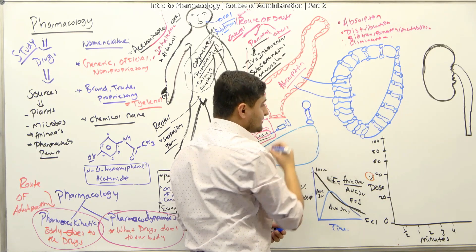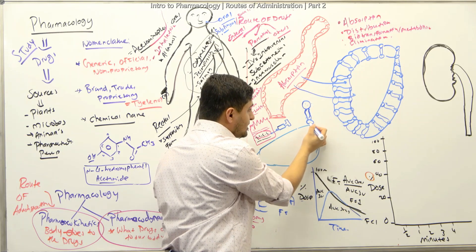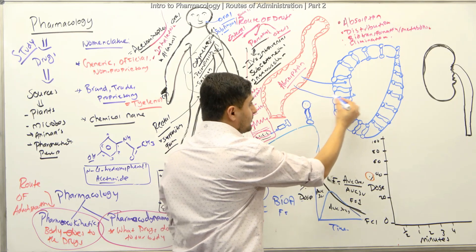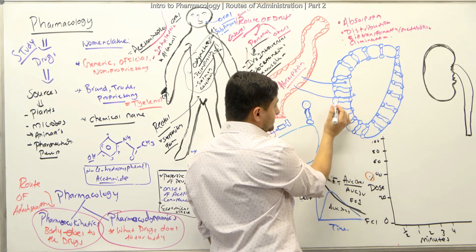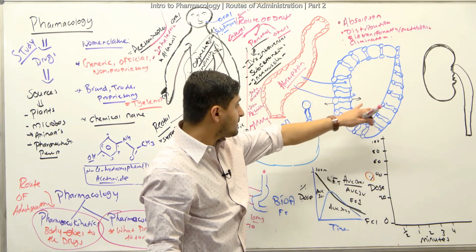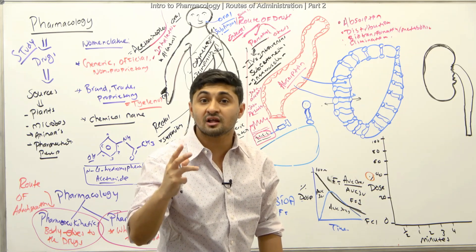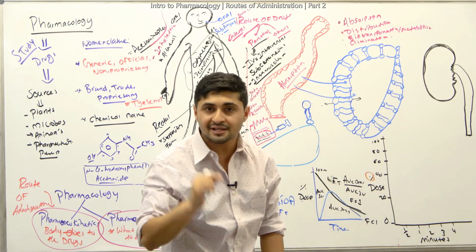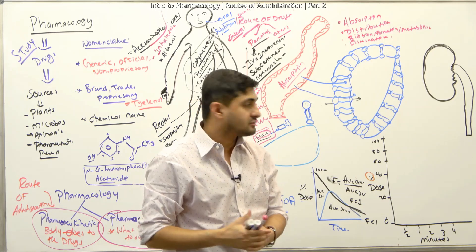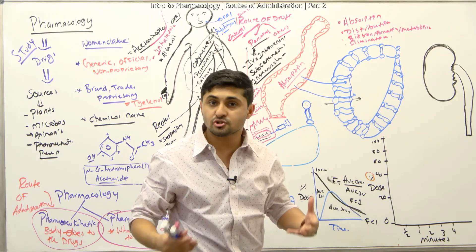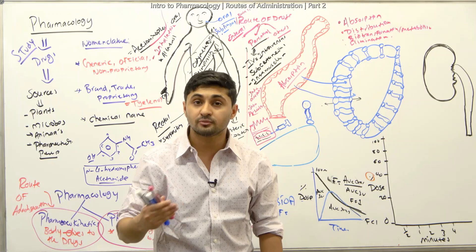The plasma membrane is made of a phospholipid bilayer. One side faces the interstitial space and one faces the cytoplasm — both are hydrophilic, meaning water-loving. The inside of the membrane is hydrophobic, meaning it repels water-soluble drugs. Lipid-soluble or fat-soluble drugs can easily pass through the plasma membrane, which is why most drugs are designed to be lipid-soluble.